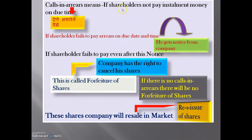Calls in arrears means if shareholders do not pay installment money on the due time or due date. If shareholders fail to pay the arrears on due date, that is calls in arrears. After that, the shareholders get a notice from the company. If the shareholder fails to pay even after this notice, the company has the right to cancel his shares — this is called forfeiture of shares.